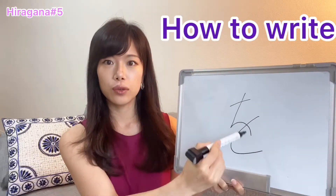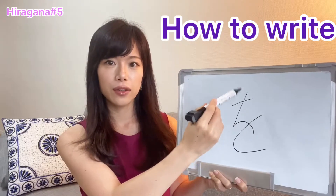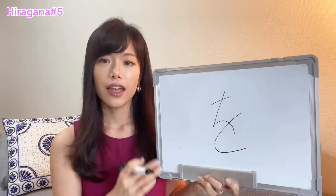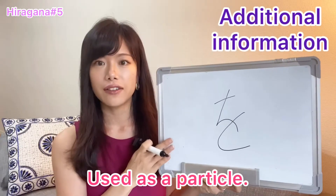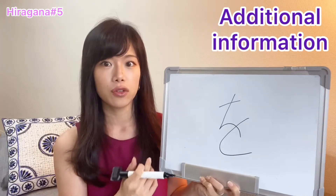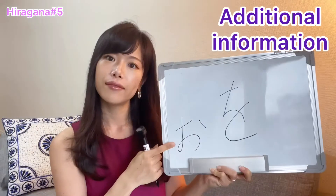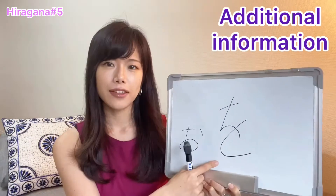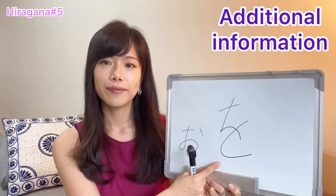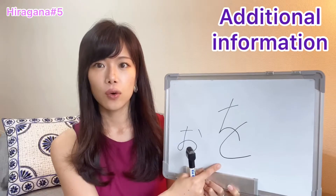One, Two, Three. One, Two, Three. Once again. One, Two, Three. O. And o is used as a particle, and it has the same pronunciation as this character. Some Japanese say O, but mainly we say O.